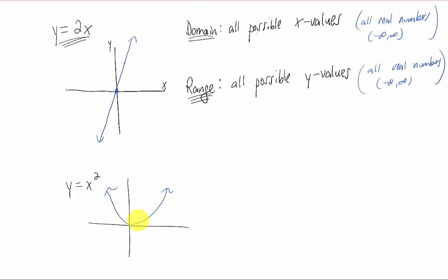Graph of y equals x squared looks something like this. The inputs of this function are all the possible x values of this function, and just like before, there are no restrictions on this.